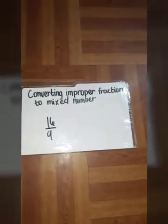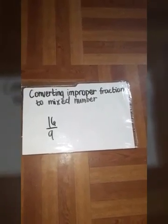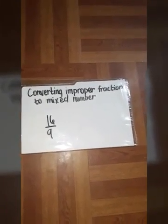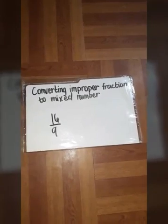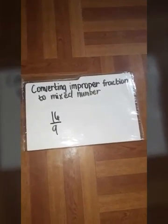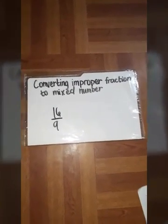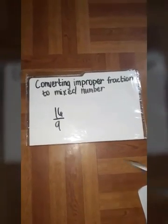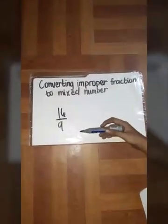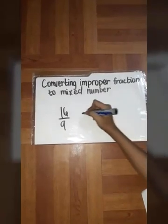Now we're going to show how to convert an improper fraction to a mixed number. Here I have an example of an improper fraction: 16 over 9. And we're going to divide 16 by 9.